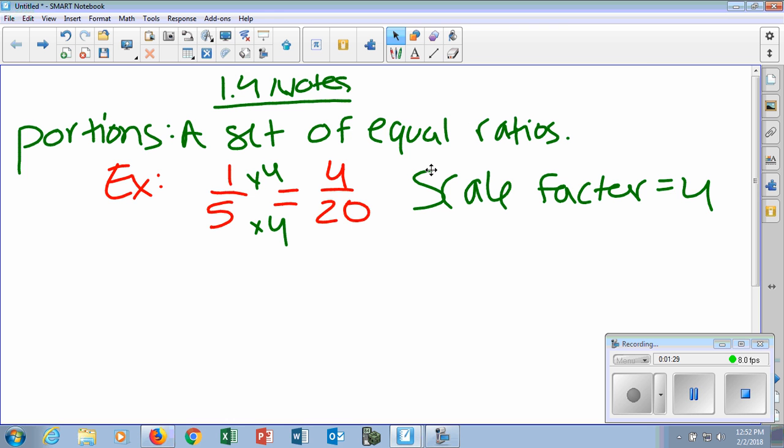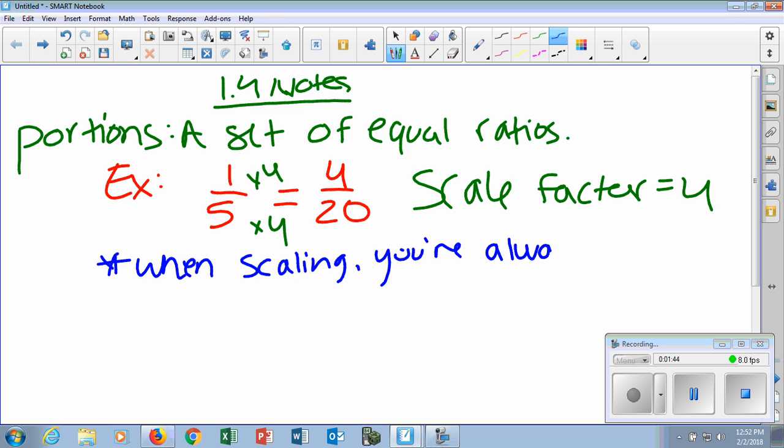What we do have to remember, though, this is key to scaling ratios, is when we are scaling, you are always multiplying. So like we did up here, we multiply the numerator and the denominator by 4. We are always multiplying those scale factors.